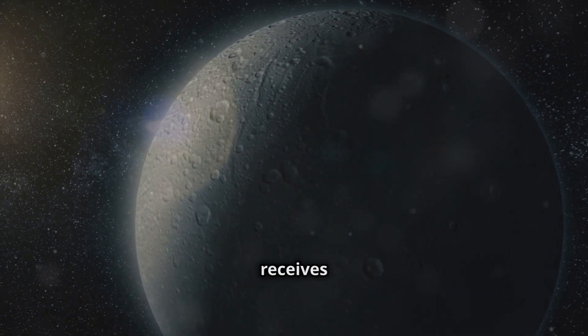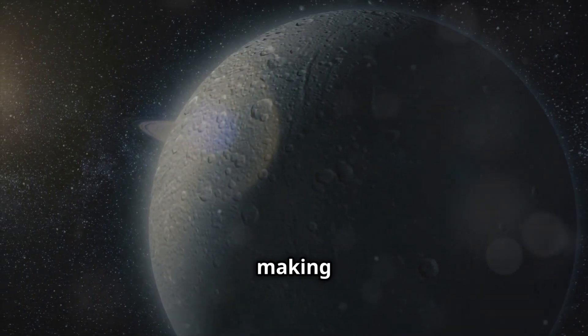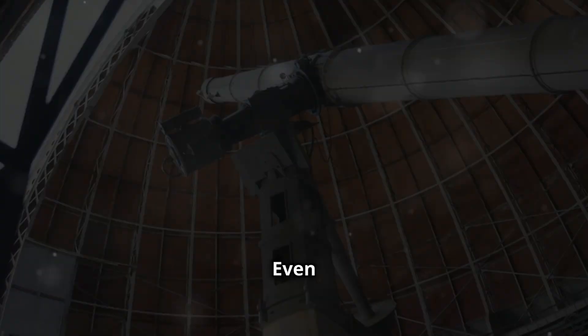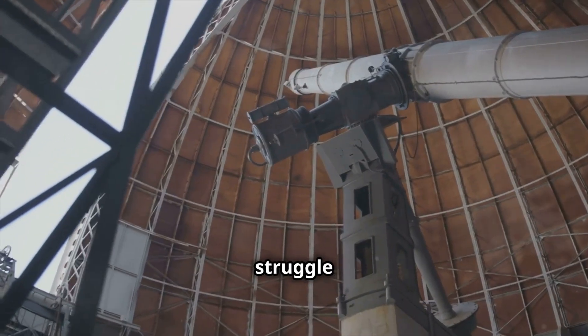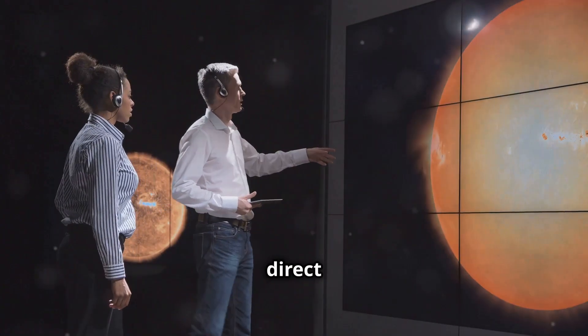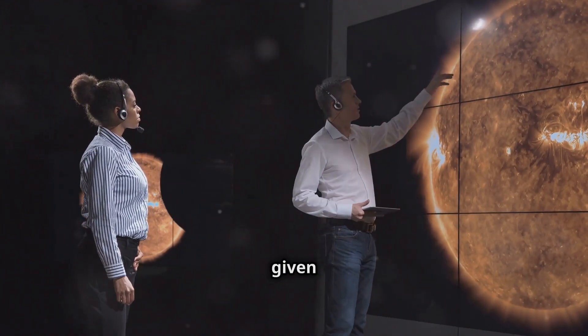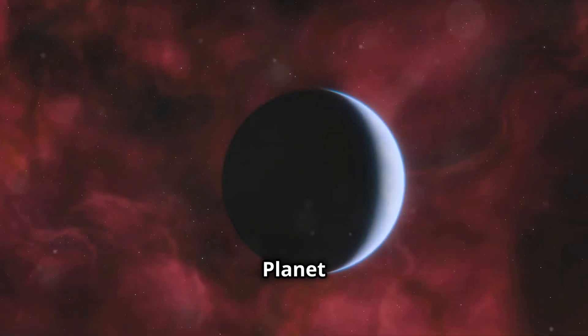Its vast distance means it receives very little sunlight, making it incredibly faint. Even the most powerful telescopes struggle to see it. But the lack of direct observation doesn't mean we've given up hope. The hunt for Planet Nine continues.